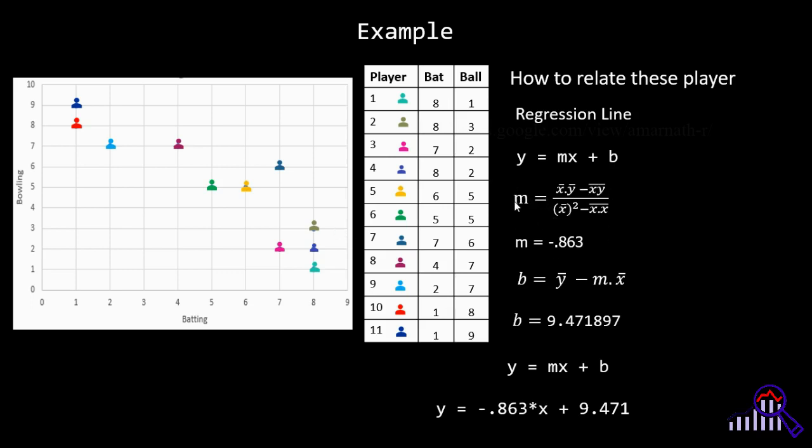After computing the slope and offset, you will get the respective values. So here we have the line equation. Just substitute slope and offset in this equation. You will get the corresponding line equation for these features.